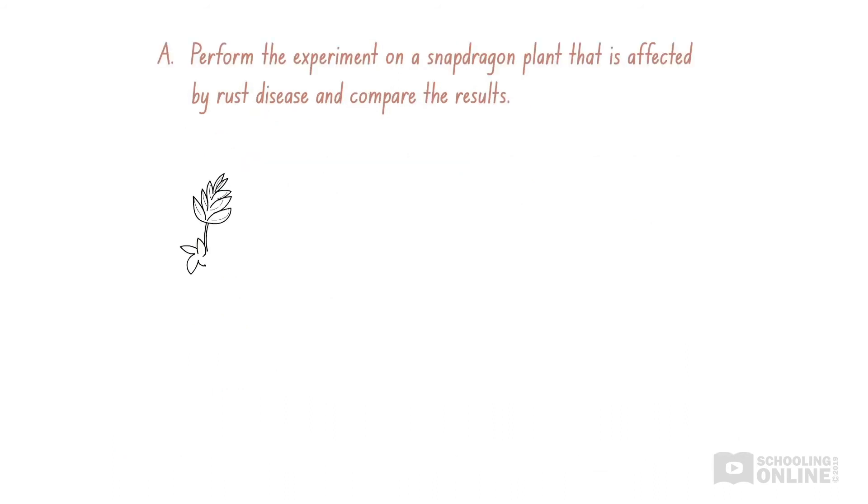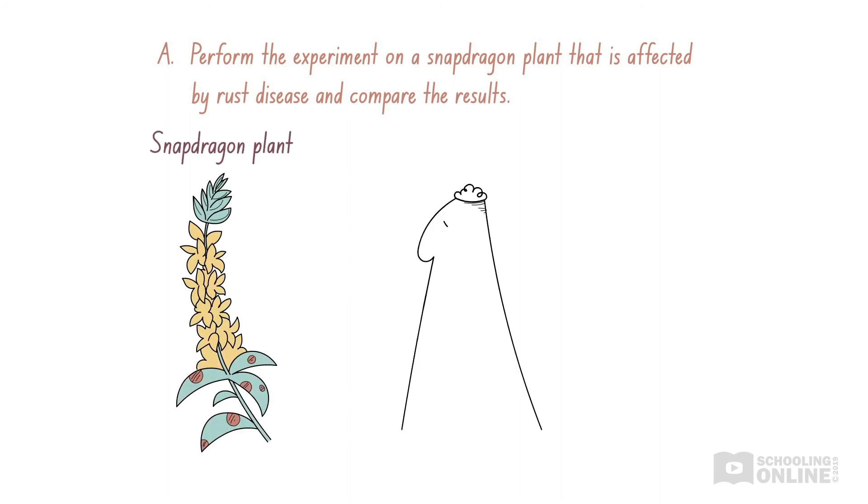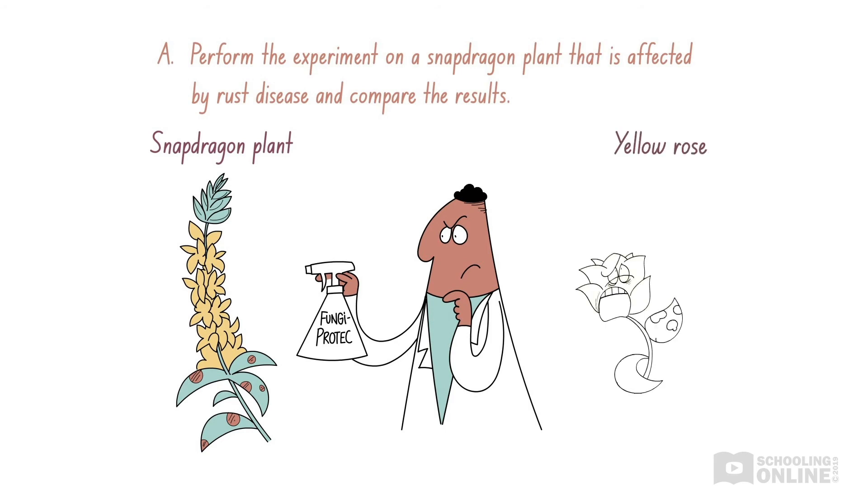Option A refers to repeating the experiment with another plant species, the snapdragon. Although this plant is also affected by rust disease, the fungicide might be more effective in snapdragons than on yellow rose plants. Thus, Dan should continue to analyse the same plant species. If he does this, then he can check if the effect of the fungicide is the same for other yellow rose plants. Therefore, option A is incorrect.